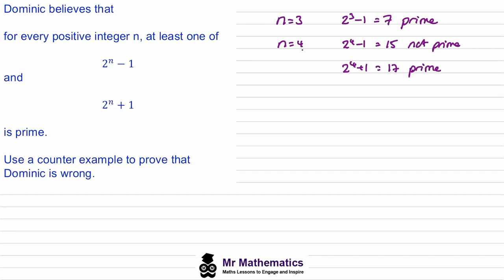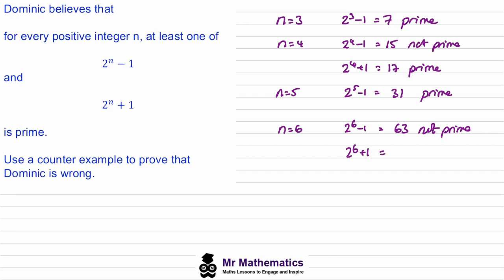So n equals 4 also satisfies the statement. When n equals 5, we get 2 to the 5 minus 1, which is 31, and 31 is prime. So if we try n equals 6, we get 2 to the 6 minus 1, and 64 minus 1 is 63. This is not prime. We then try 2 to the 6 plus 1, which is 65, and again this is not prime.